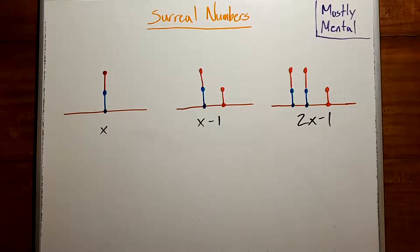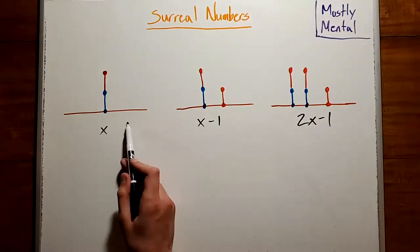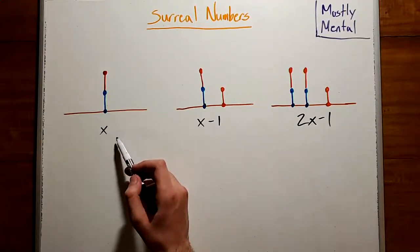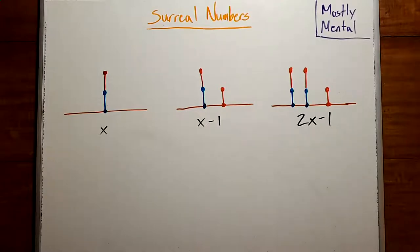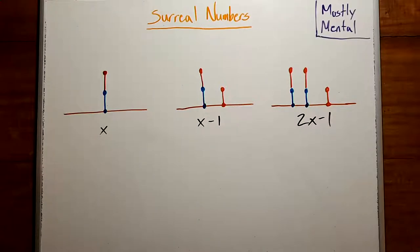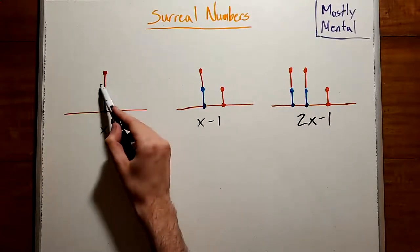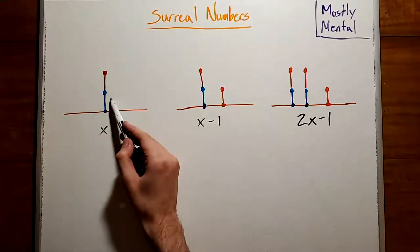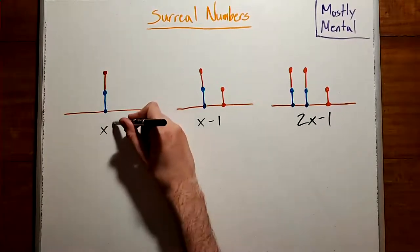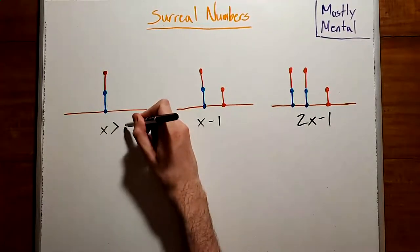What happens if the edges aren't so neatly separated? For instance, what if we have a position like this one where the edges are stacked? What value should we give this position? Well, if blue goes first, she'll cut this edge, leaving red with no legal moves. And if red goes first, he'll cut this edge, blue will cut this one, and red will be left with nothing. So whoever goes first, blue wins. And as we just said, that means the value of this position is positive.